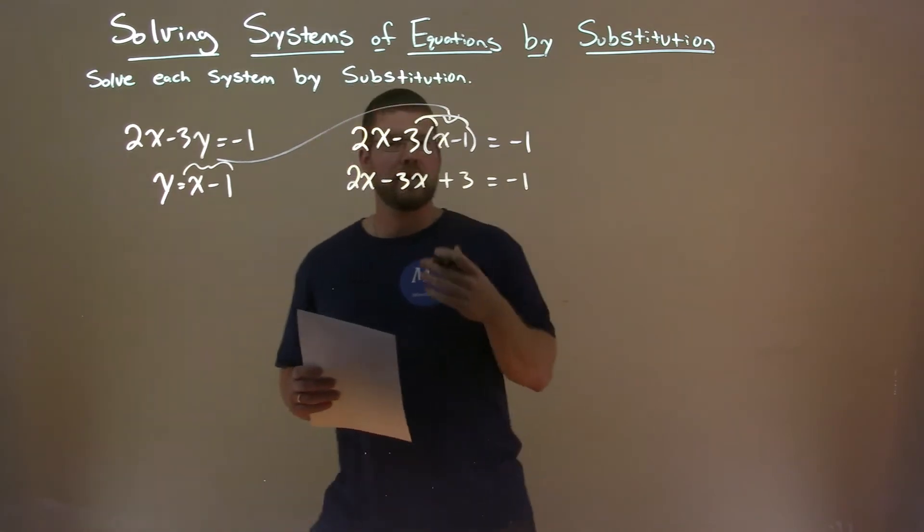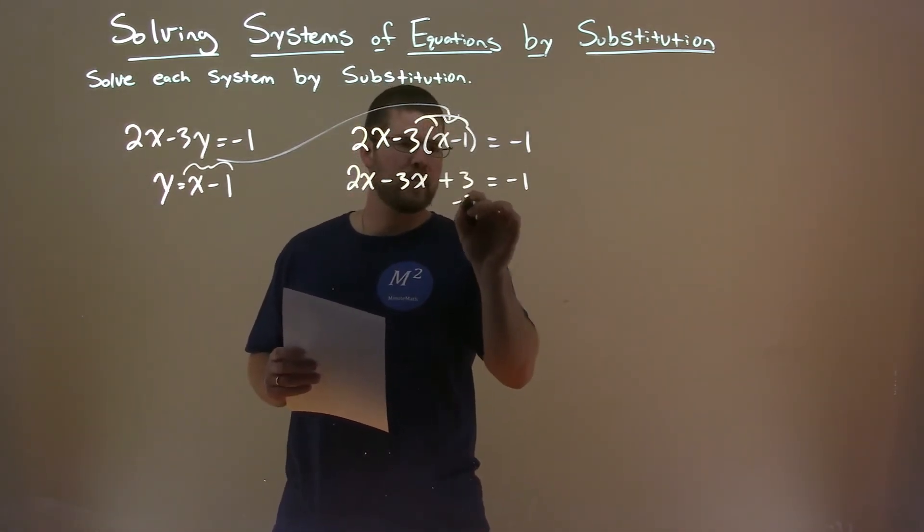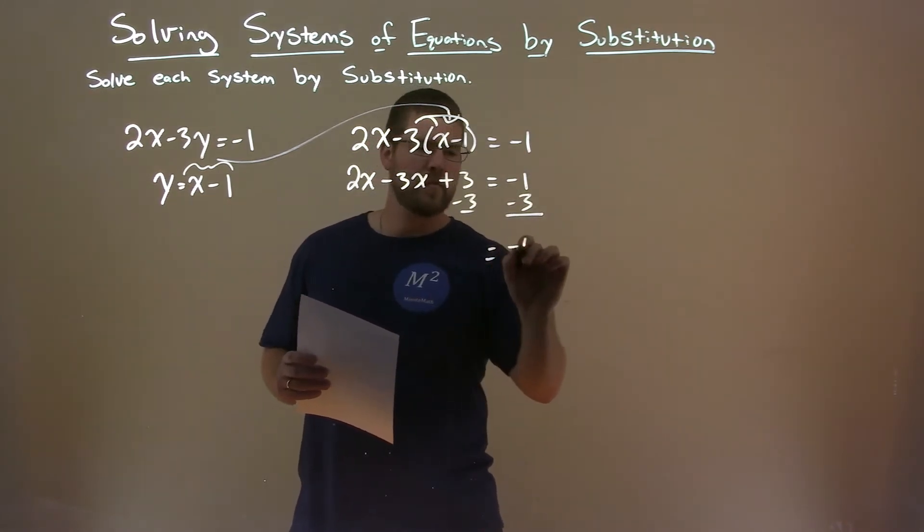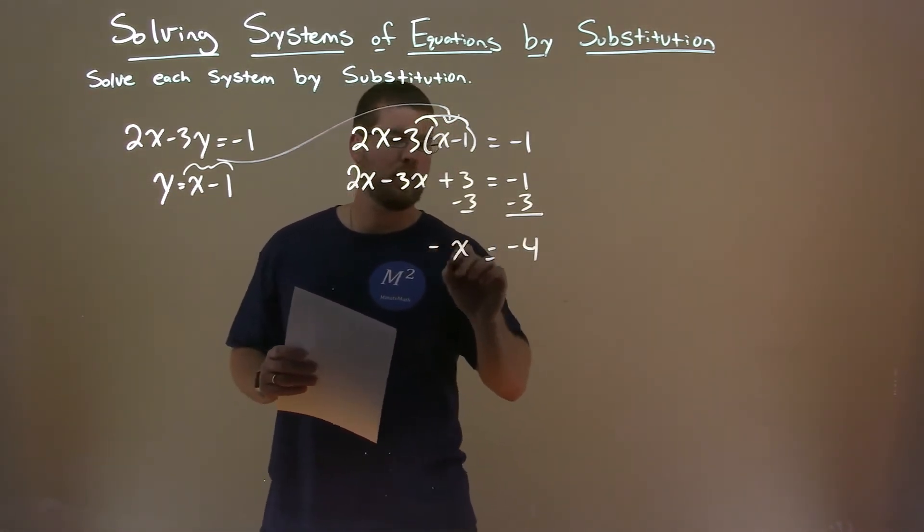Now we want to keep simplifying, so let's bring our like terms together. Subtract 3 from both sides. Minus 1 minus 3 is minus 4, and 2x minus 3x is a minus 1x.